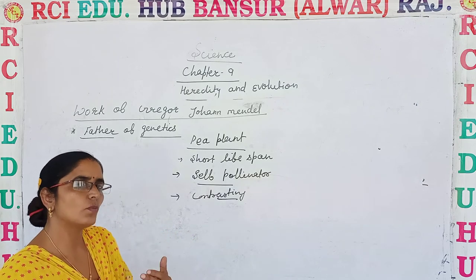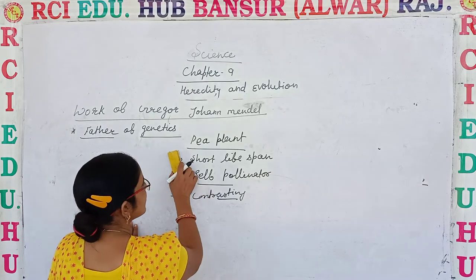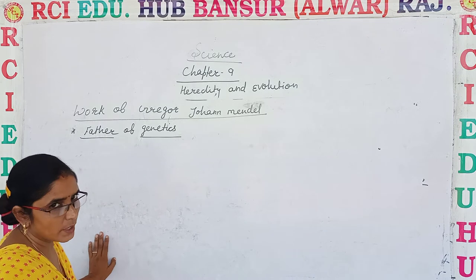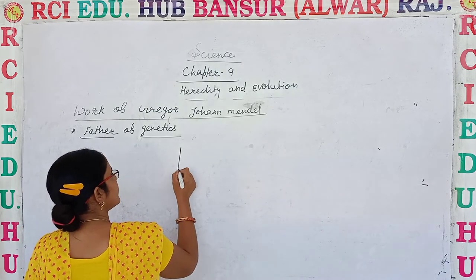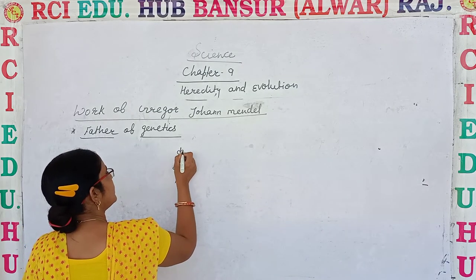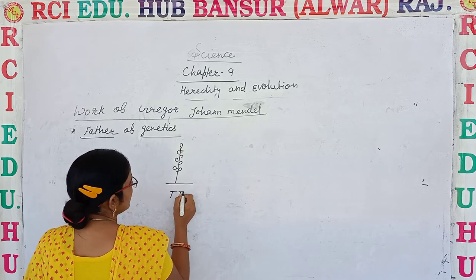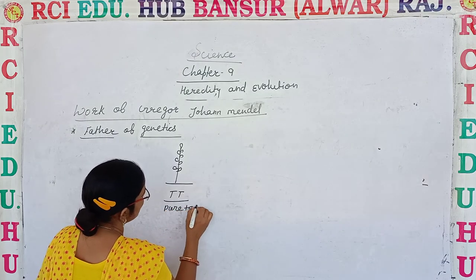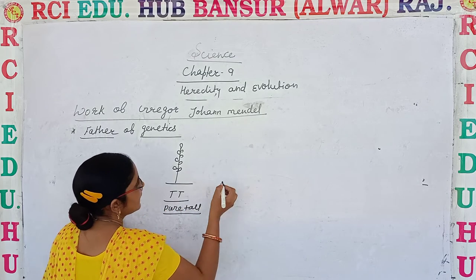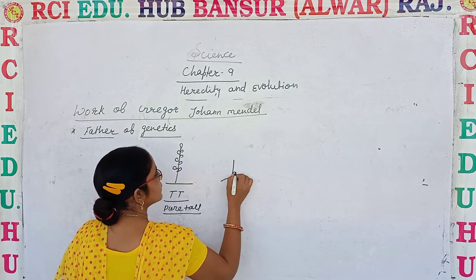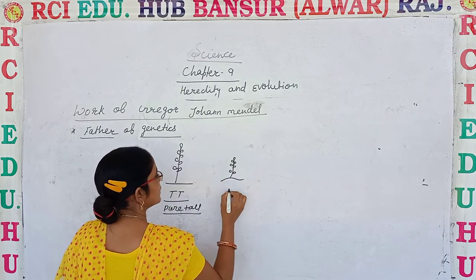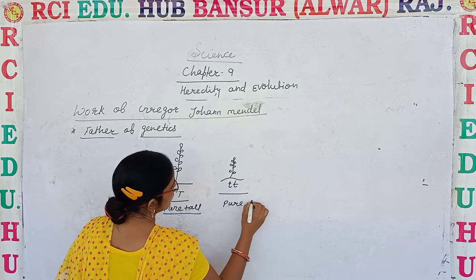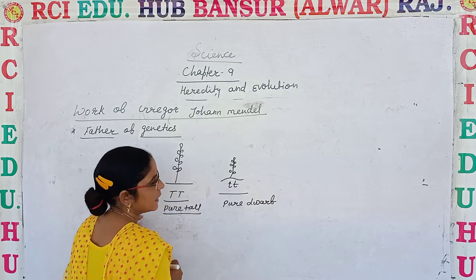Mendel gave us three laws, which we discussed last time. First of all, he crossed a tall plant. He took a tall pea plant whose genotype is capital T capital T — meaning he has taken a pure tall plant. The other one is the dwarf plant, whose genetic make-up is small t small t, and that is known as pure dwarf.